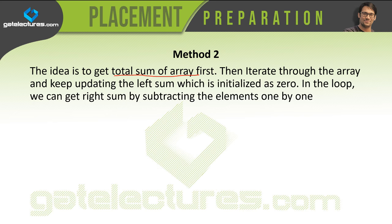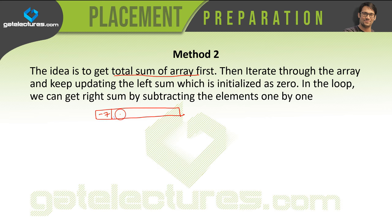So how is this working? Assuming that we have the following array. This array has the values: minus 7, 1, 5, 2, minus 4, 3, and 0.